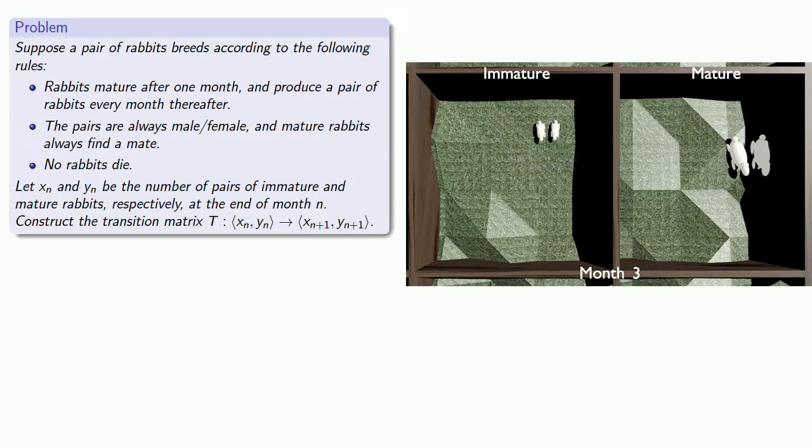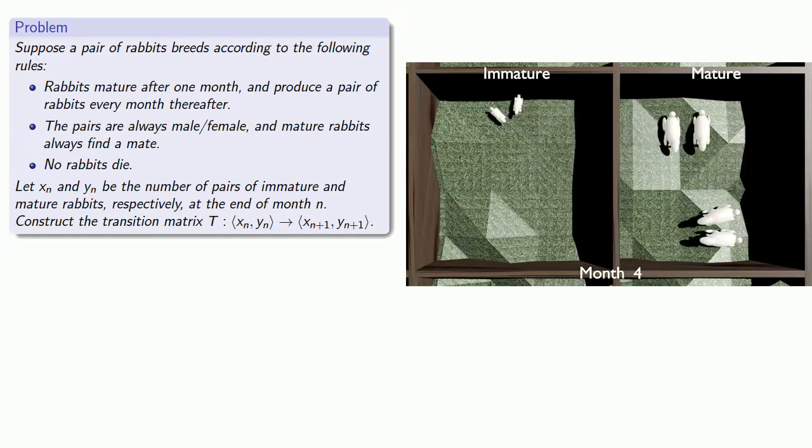What if we go into month 4? First, the immature rabbits will become mature rabbits. And second, the mature rabbits will produce another pair of immature rabbits. And so now we have two pairs of mature rabbits and one pair of immature rabbits.